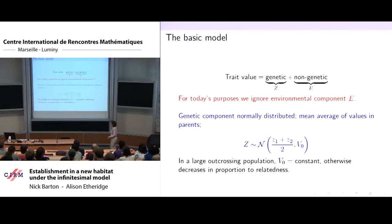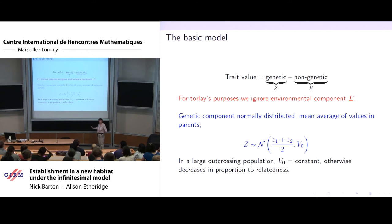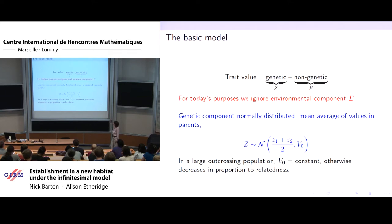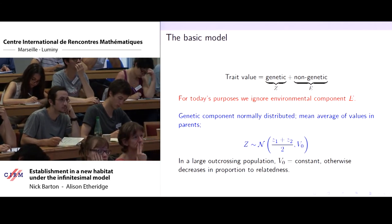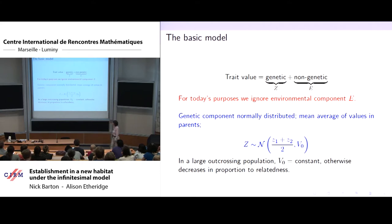Here's the basic model. We're interested in a trait value, and that trait value has two components: a genetic component denoted by capital Z, and a non-genetic component which today we're going to ignore. The infinitesimal model says that if I take two parents whose trait values are Z1 and Z2, then the distribution of traits among their offspring is normal, with mean (Z1 + Z2)/2 — the mean trait value of the parents — and some variance V0. In a large outcrossing population, that variance is constant.